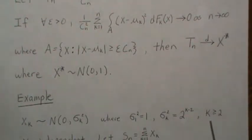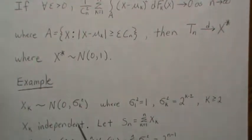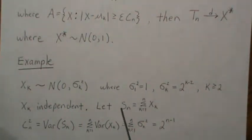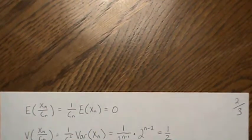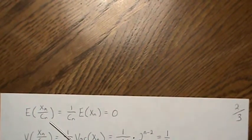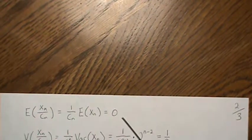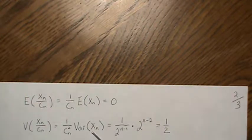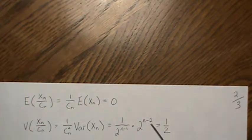The remaining σk² = 2^(k−2) for k ≥ 2. The Xk are independent. As in the theorem, let Sn be the sum, and Cn be the variance of this sum, which equals 2^(n−1). The expected value of the last term Xn/Cn is zero, since all Xk have mean zero. The variance of that last term is 2^(n−2) divided by Cn², which cancels to 1/2.